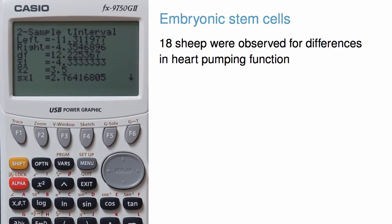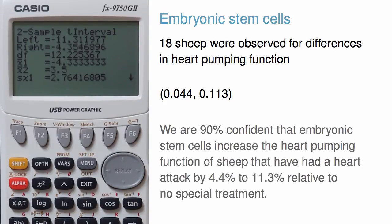To get the proper interval, we can take the negative of the interval endpoints and reverse the endpoints to get the confidence interval of interest. We are 90% confident that embryonic stem cells increase heart-pumping function of sheep that have had a heart attack by 4.4 to 11.3% relative to no special treatment. Notice that this interval is entirely above zero, so it's consistent with the conclusion from our hypothesis test.